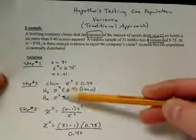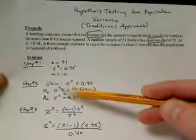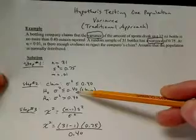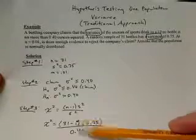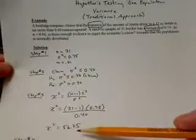The population variance is obtained from the null hypothesis because it contains equality, and we always assume that the null hypothesis is true at the start of the test. So it's 0.40. Calculating that all out, we get 56.25. That's our test statistic.